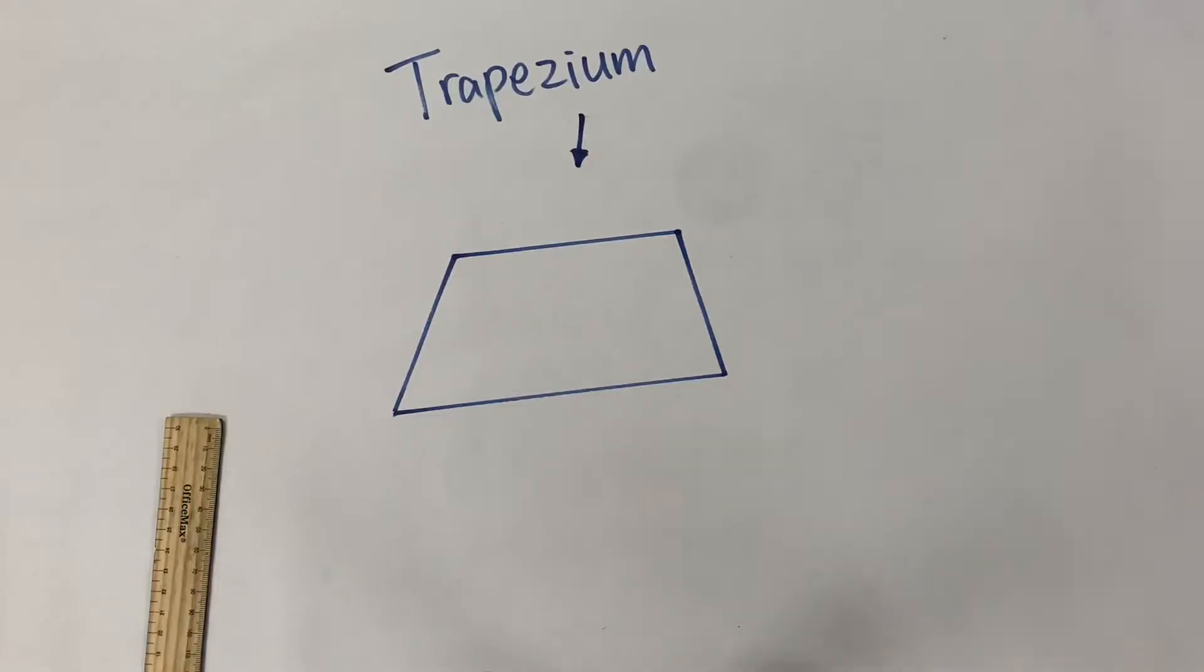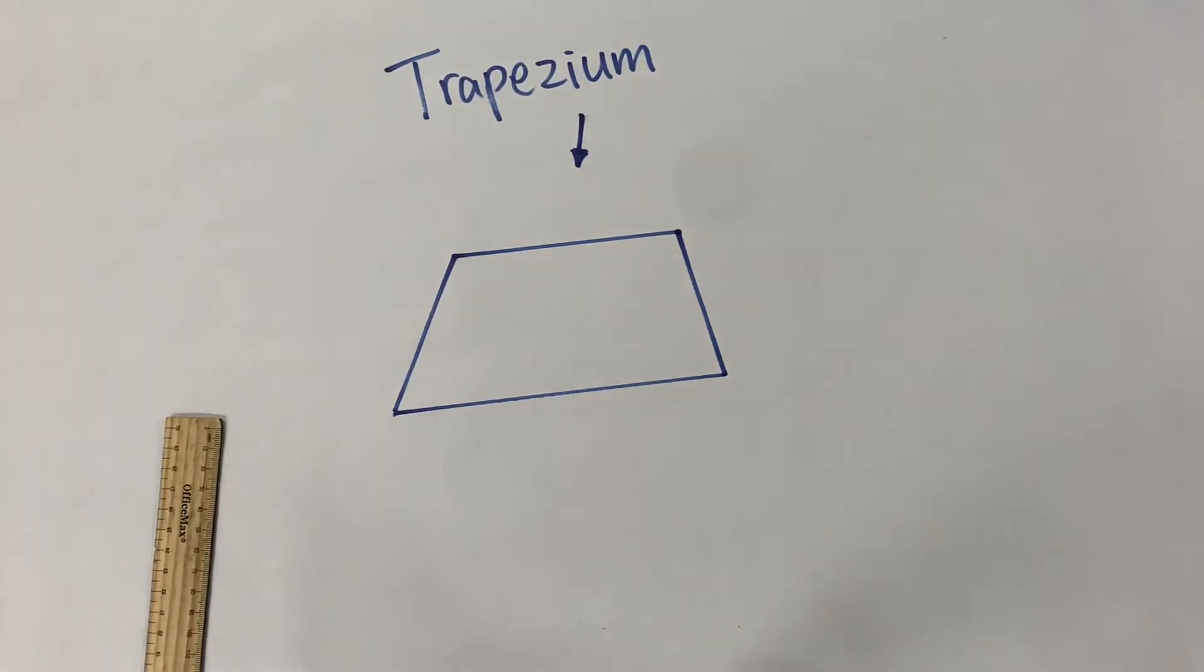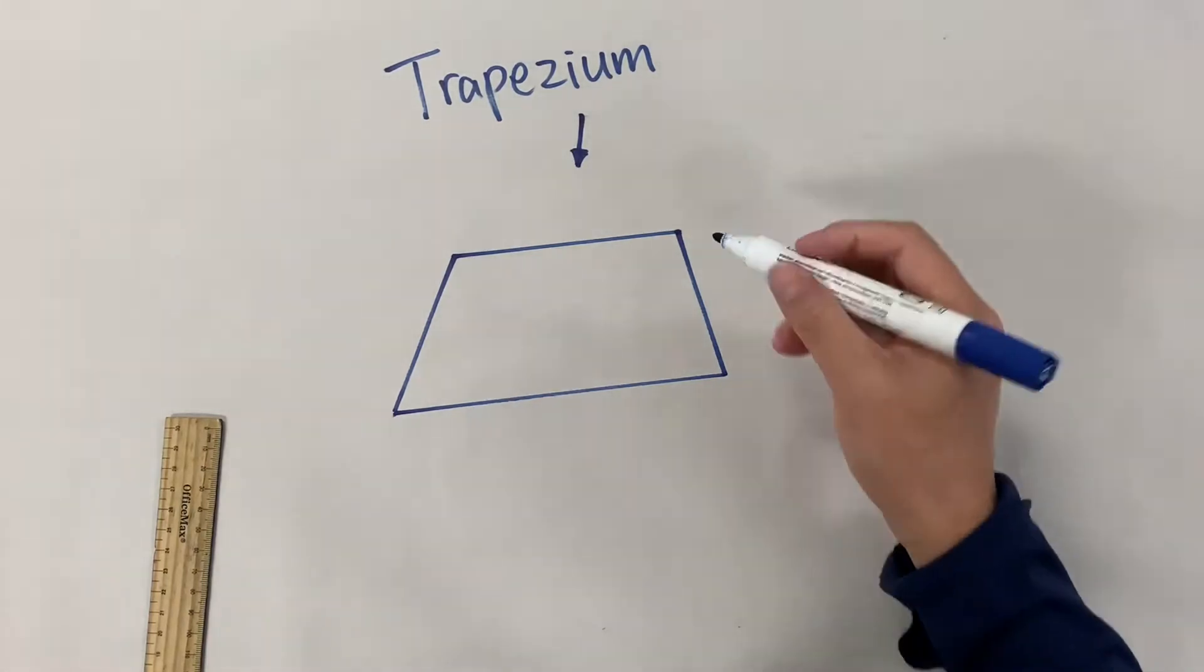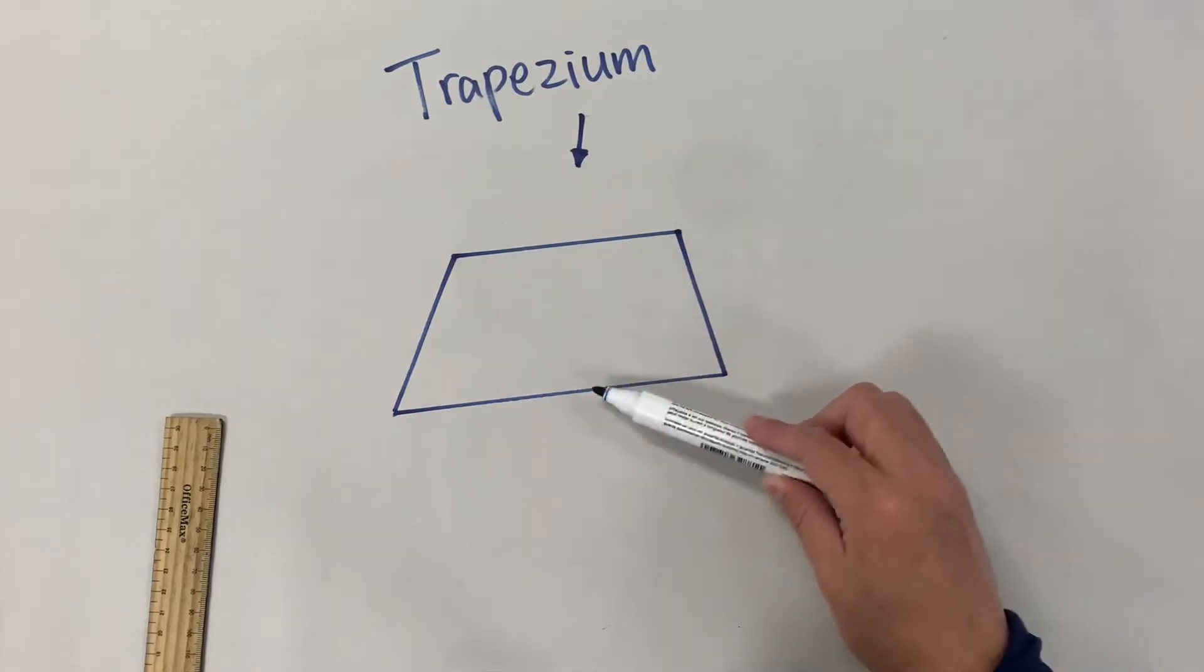So if you have watched the rectangle video, you know what it is. Now this is a polygon. This is a polygon with four straight sides.